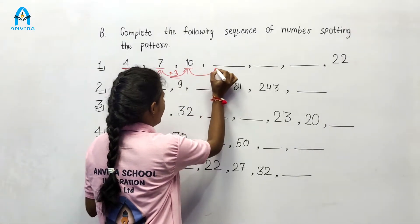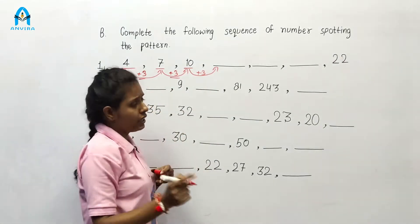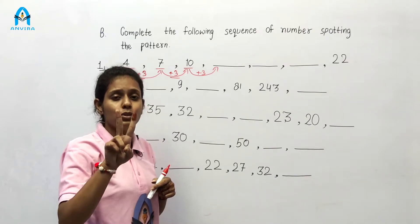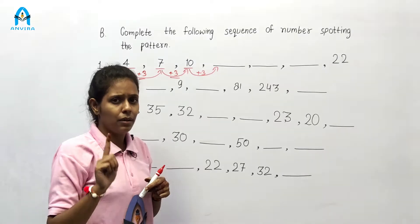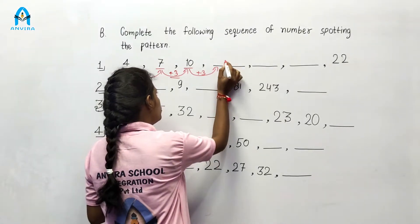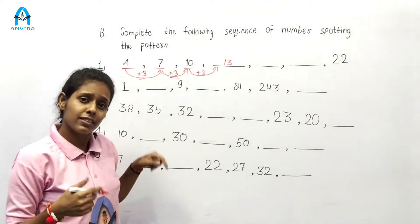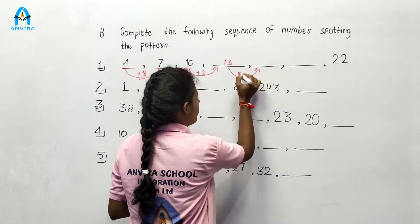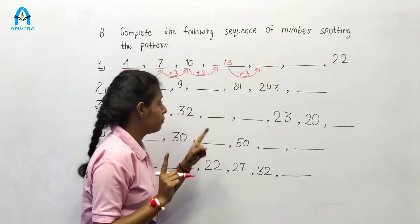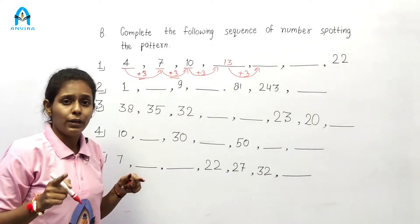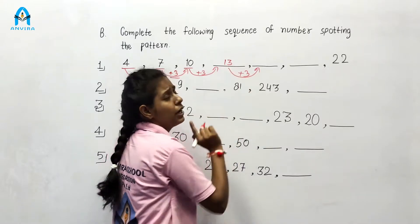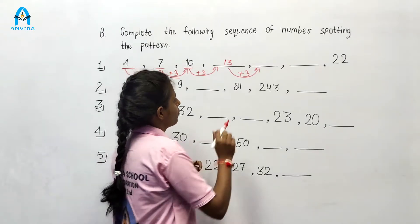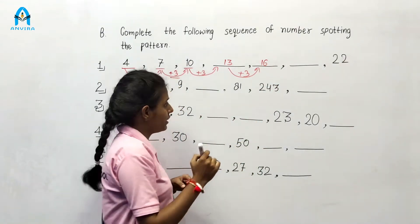So for getting the next number, we have to add 3 to 10. Ten plus 3 is equal to 13. So the next number is 13. Now we get the next number by adding 3 to 13 — because the pattern follows number 3. So 13 plus 3: counting 13, 14, 15, and 16. The next number is 16.